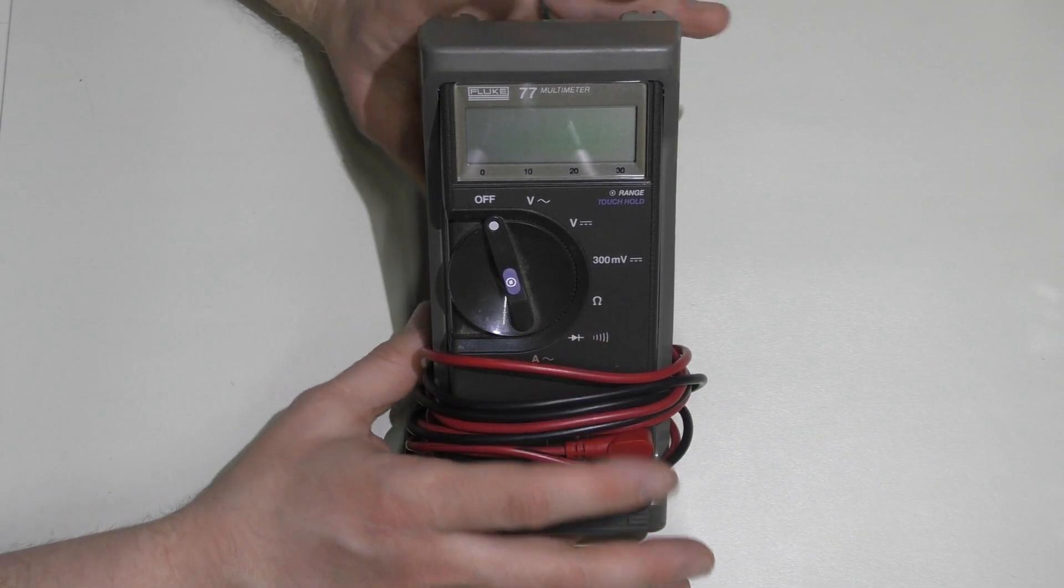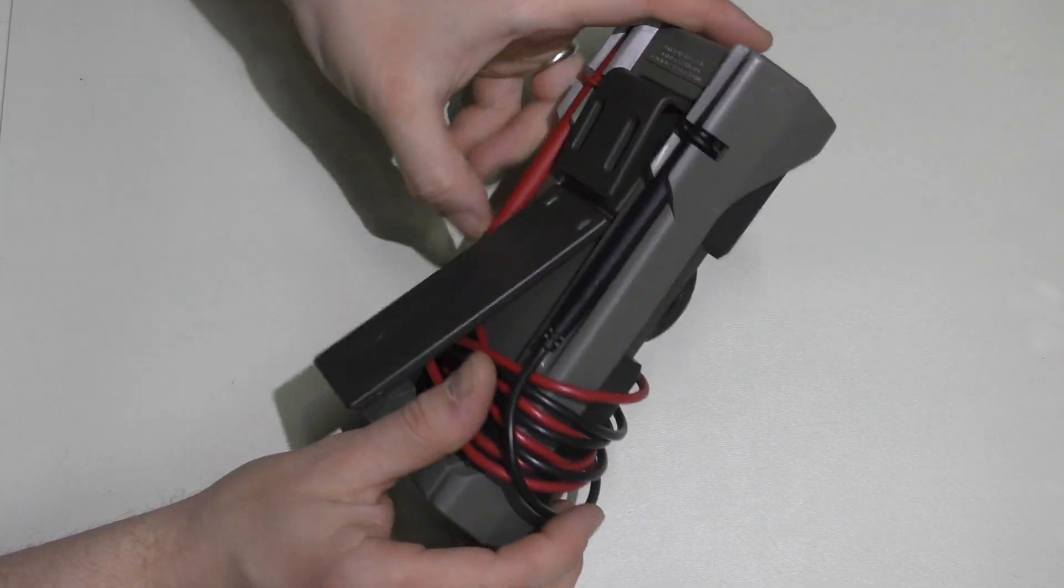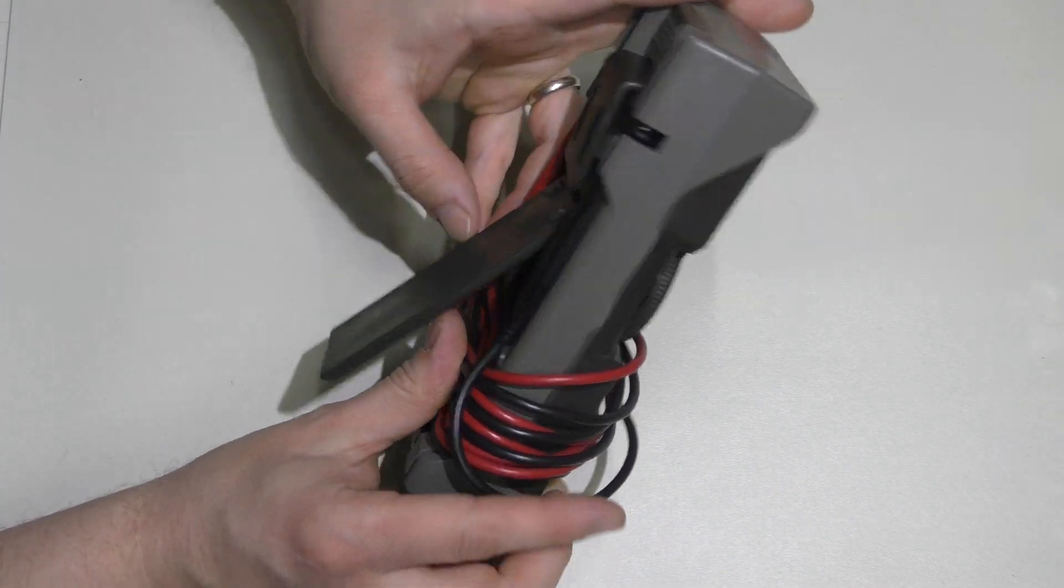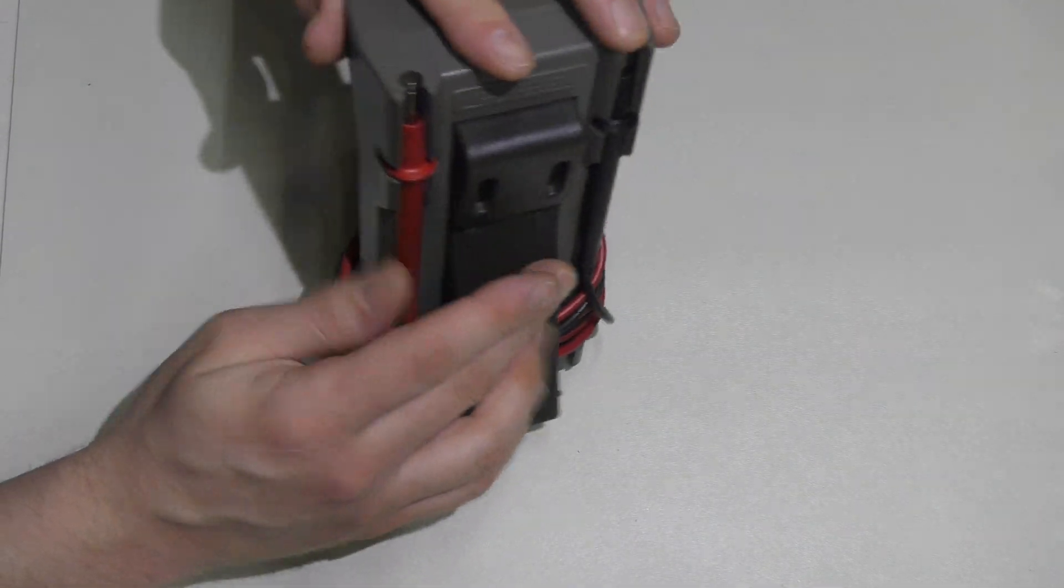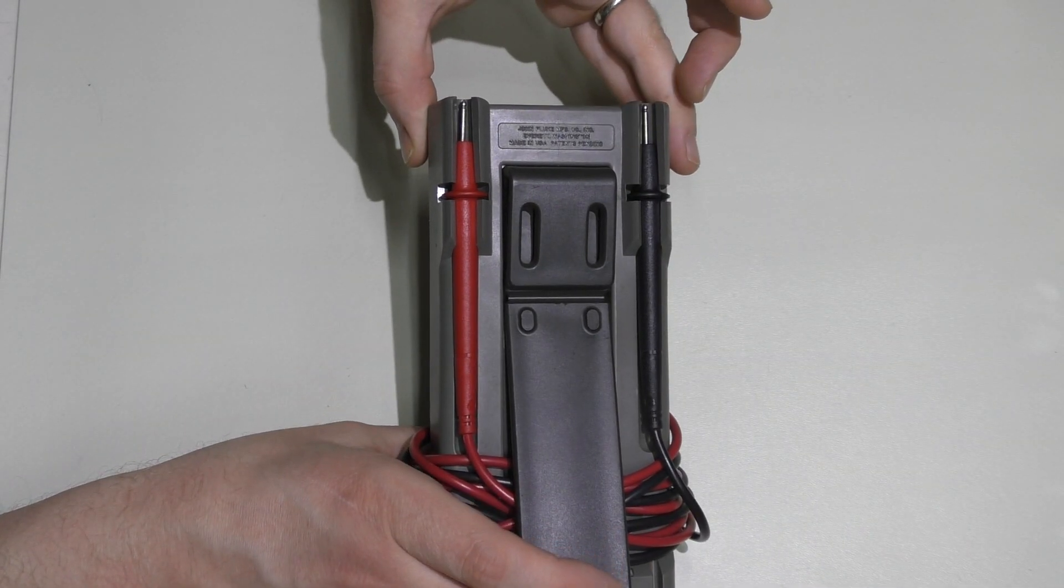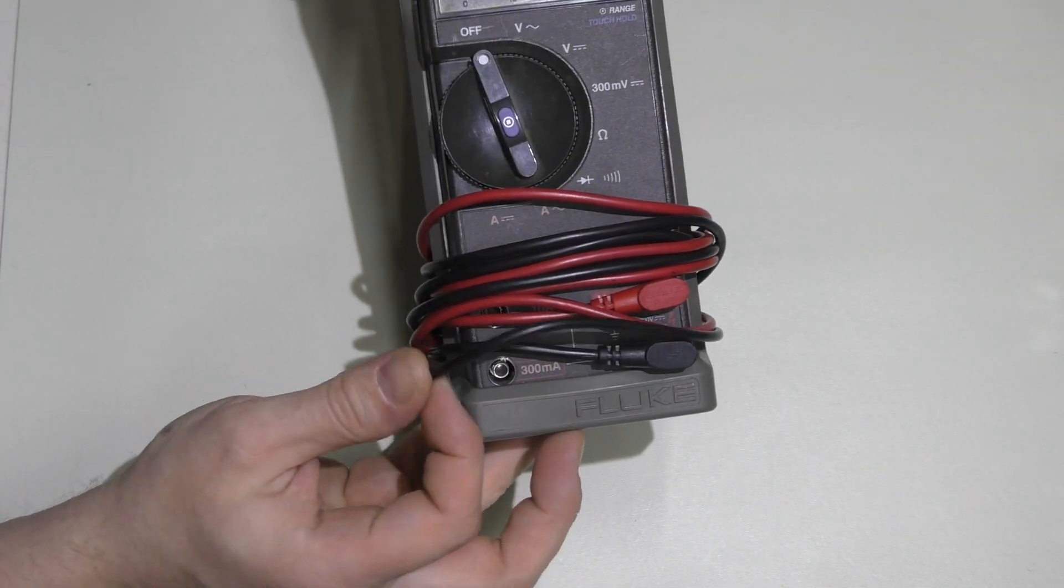This one is nice because it had the case that gave it the extra little foot stand on the back here and also has a belt clip. You can keep the leads clipped in the back, and I've just spooled the leads around here.